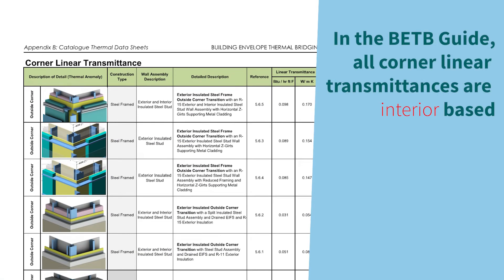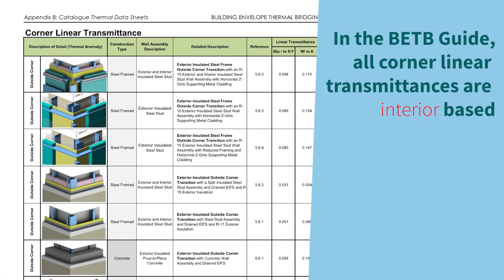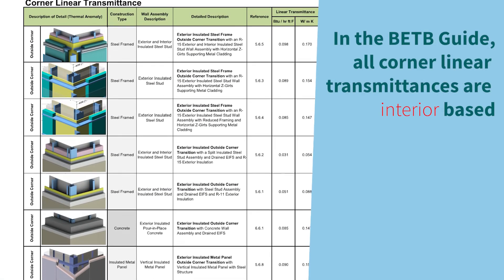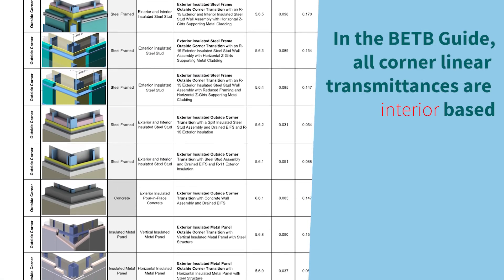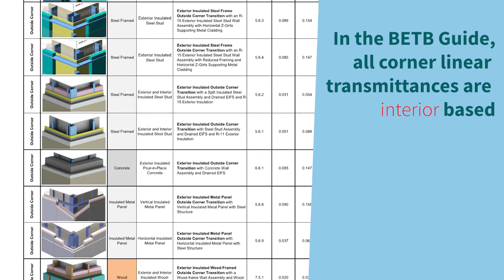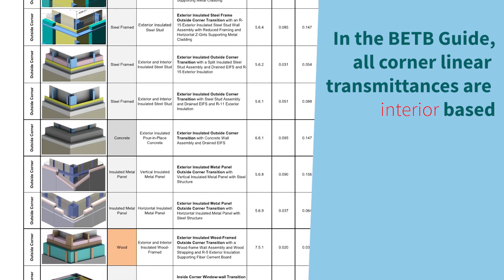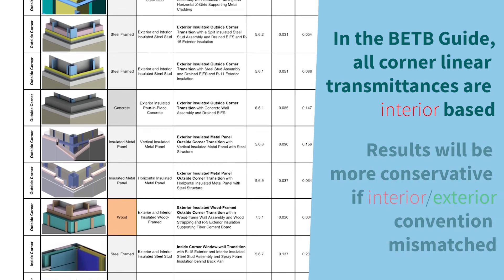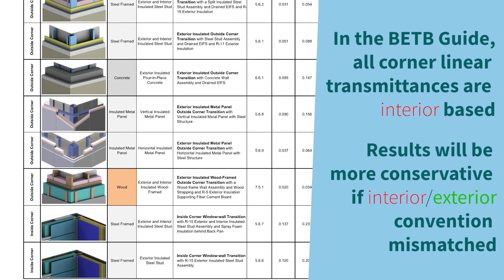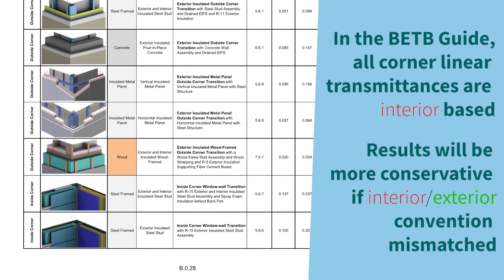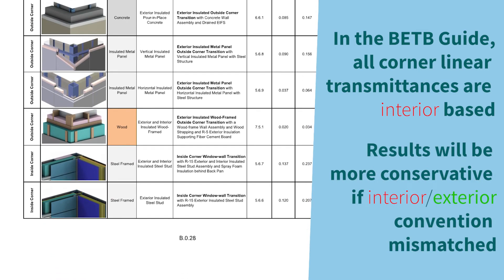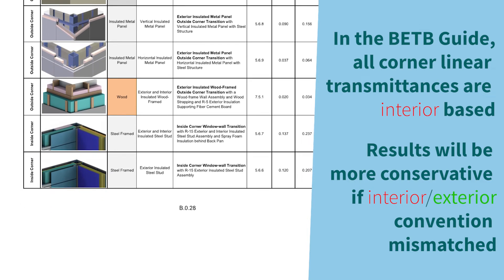In the BETB guide, all the linear transmittances for corner or wall-to-roof interface details are based on interior dimensions. That way, the results will be slightly more conservative if mismatched in the takeoffs.